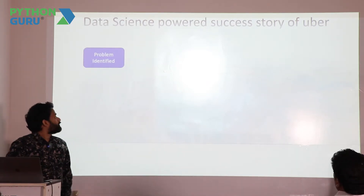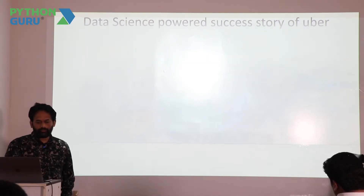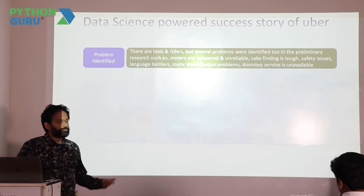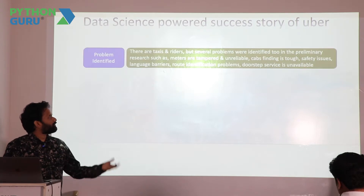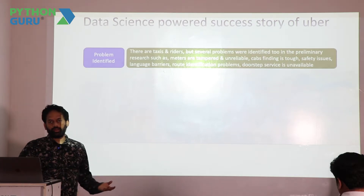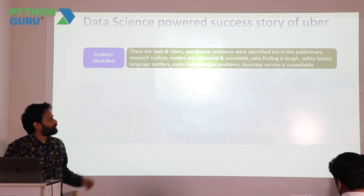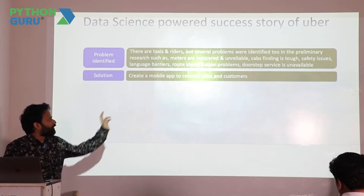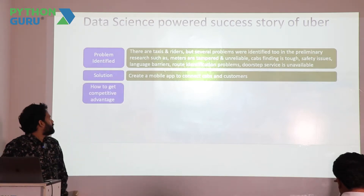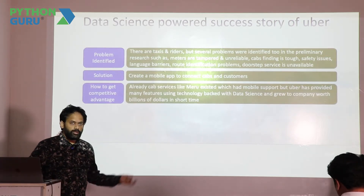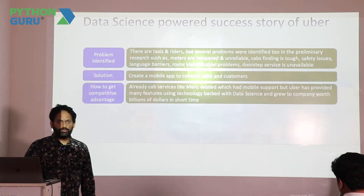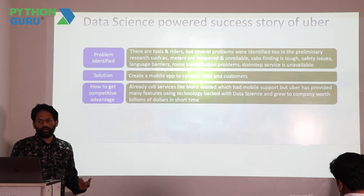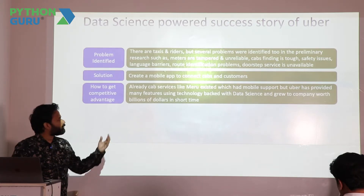So this is the story of Uber. It is not like they solved a new problem — they solved the same problem differently, and that's how they became successful. The problem they identified was that taxis and people existed but had no connection, meters were tampered and unreliable, finding cash was a challenge, and there were safety issues and language barriers. The solution was to create a mobile app to connect drivers to customers. To gain competitive advantage over existing services like Meru, they needed to cut costs and target more audience — that's where data science was used.